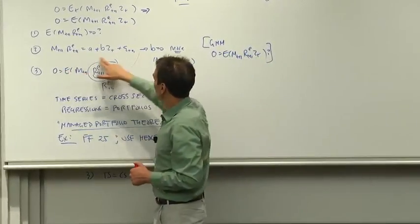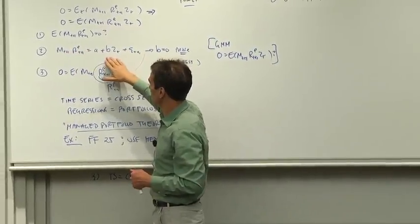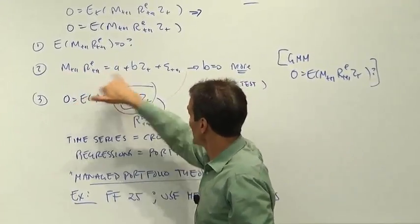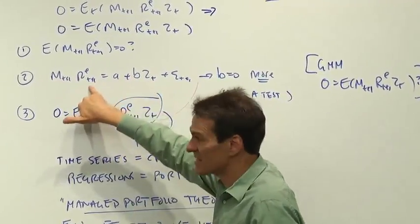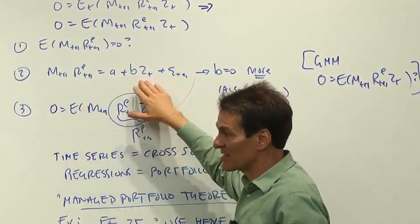This might be the clearest for right now, the clearest example of testing it using the time series. So I have a discount factor model, and this just says I make a time series regression. Can I predict the discounted return? And if my discount factor is correct, I shouldn't be able to predict the discounted return.